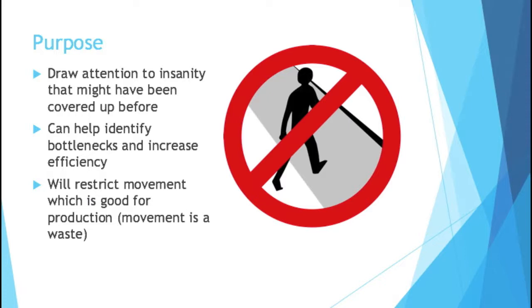You might be asking, aren't bottlenecks obvious? Traditional ones, yes. But if you have one operator whose job takes the longest, but they typically have other employees running around to help them, it can lower their processing time and make it look like they are not the bottleneck. A spaghetti diagram will help illustrate all this movement.